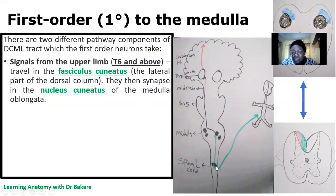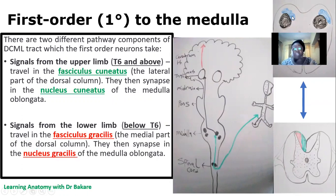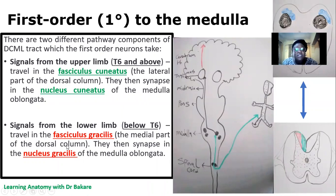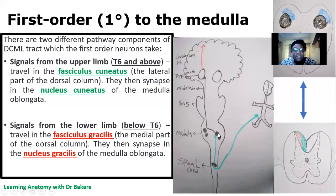The first order neuron runs from the peripheral system, passes through the spinal cord, and then goes into the medulla. In the medulla, we have the nucleus cuneatus and the nucleus gracilis — the names correspond to the dorsal column subdivisions. Fibers from the fasciculus gracilis enter the nucleus gracilis of the medulla, and fibers from the fasciculus cuneatus enter the nucleus cuneatus of the medulla oblongata. When they reach the medulla they synapse — the first synaptic point in the dorsal column medial lemniscal pathway occurs in the medulla.